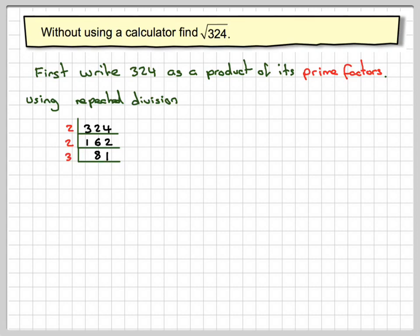3 goes into 81, 27 times. And then 3 also goes into 27, 9 times. 3 goes into 9, 3 times. And then 3 goes into 3, 1 time.